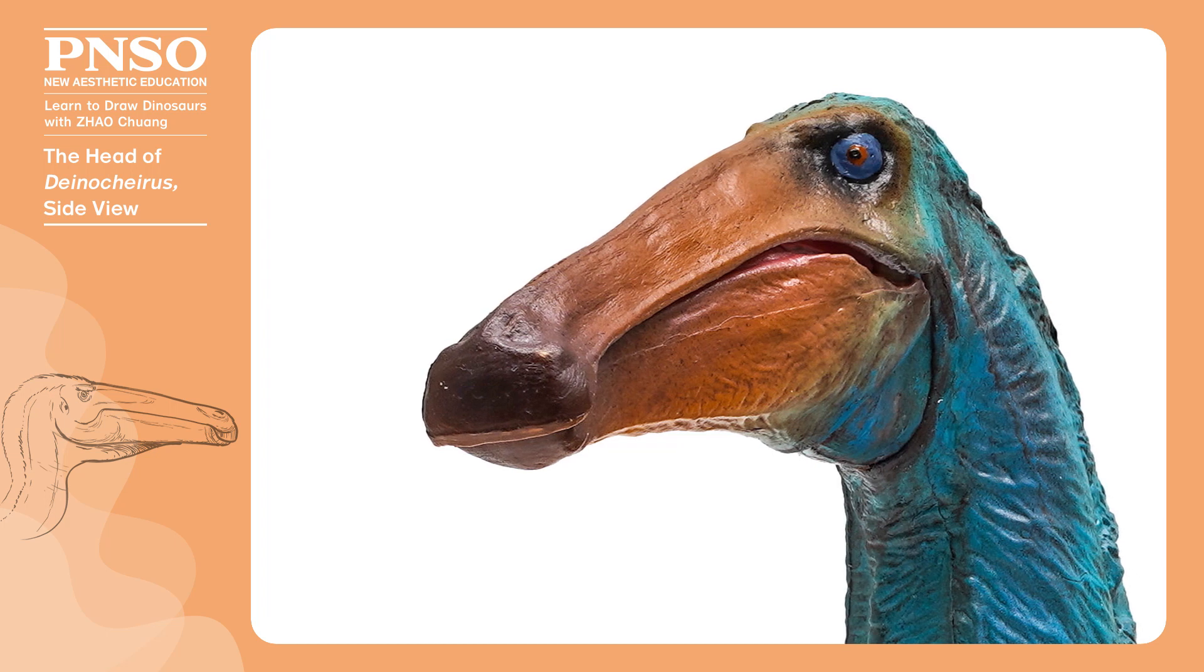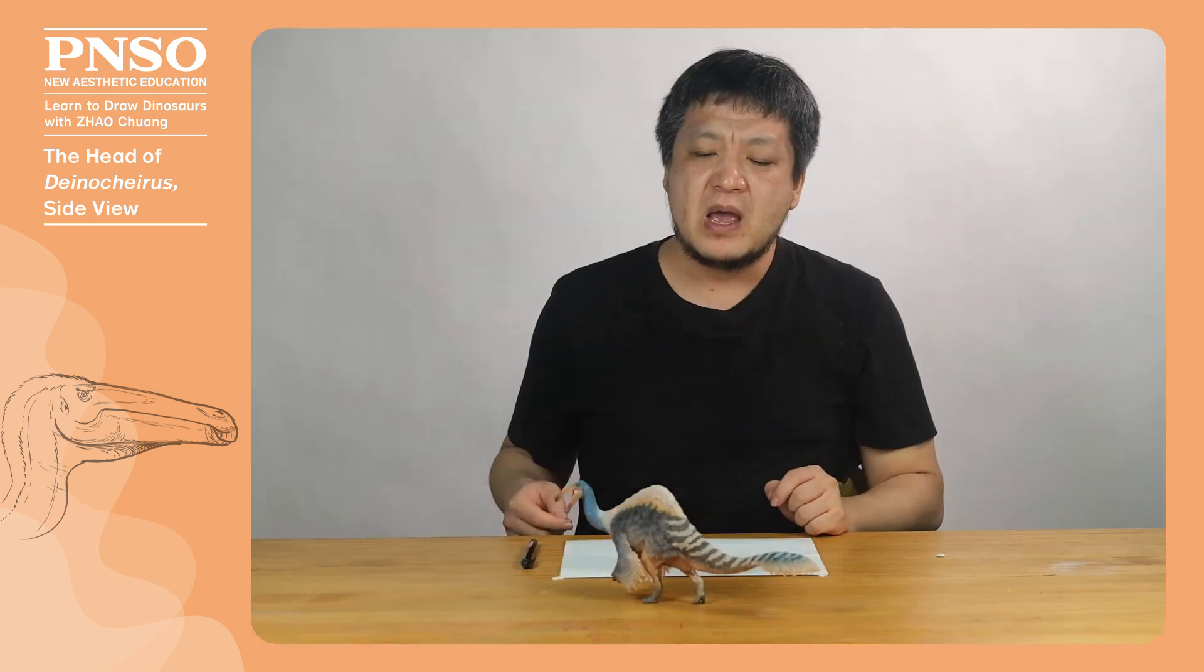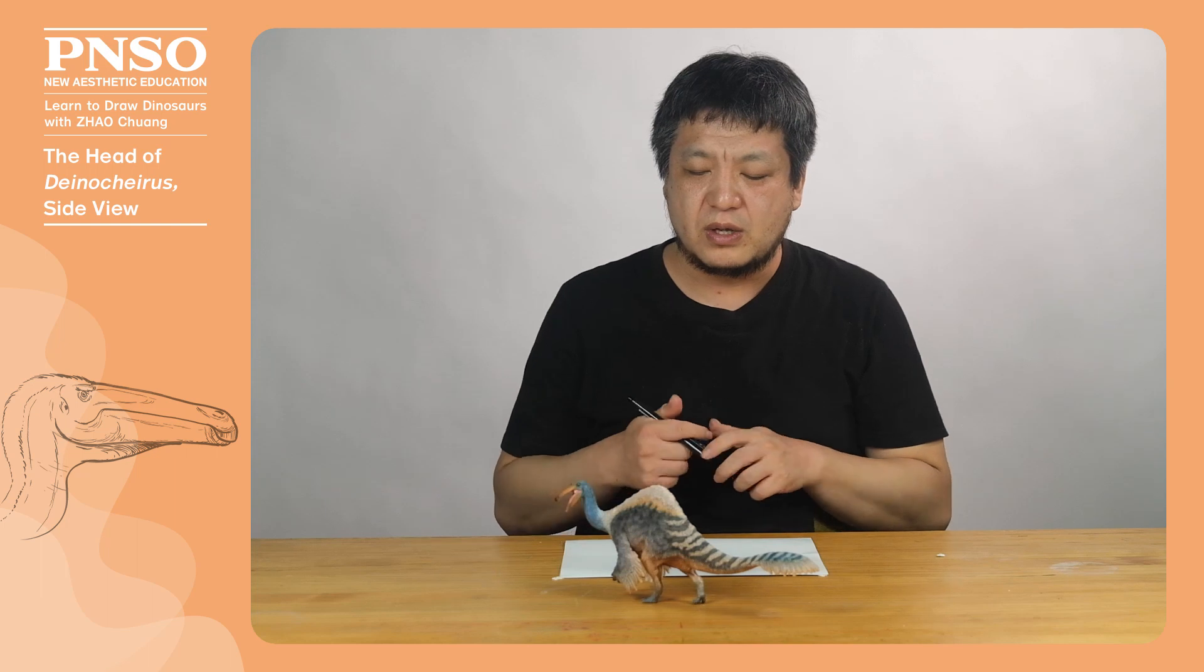In addition, its nostrils were facing upwards, and its eyes were very small. Now, let's start to draw the head of Deinocheirus.